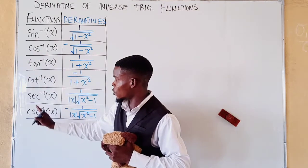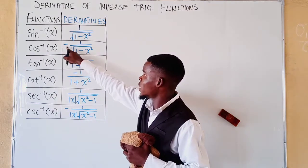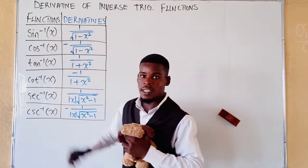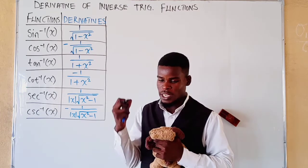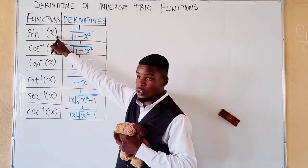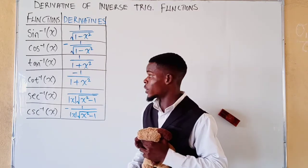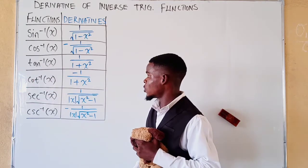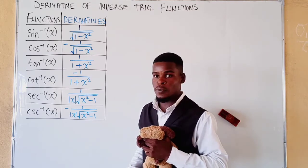All the co-functions — cosine inverse, cotangent inverse, cosecant inverse — have derivatives that are the negatives of their corresponding main functions. So the derivative of cosine inverse is the negative of the derivative of sine inverse. Similarly, the derivative of cotangent inverse is the negative of the derivative of tangent inverse. The derivative of tangent inverse is one over one plus x squared, defined for all real numbers.